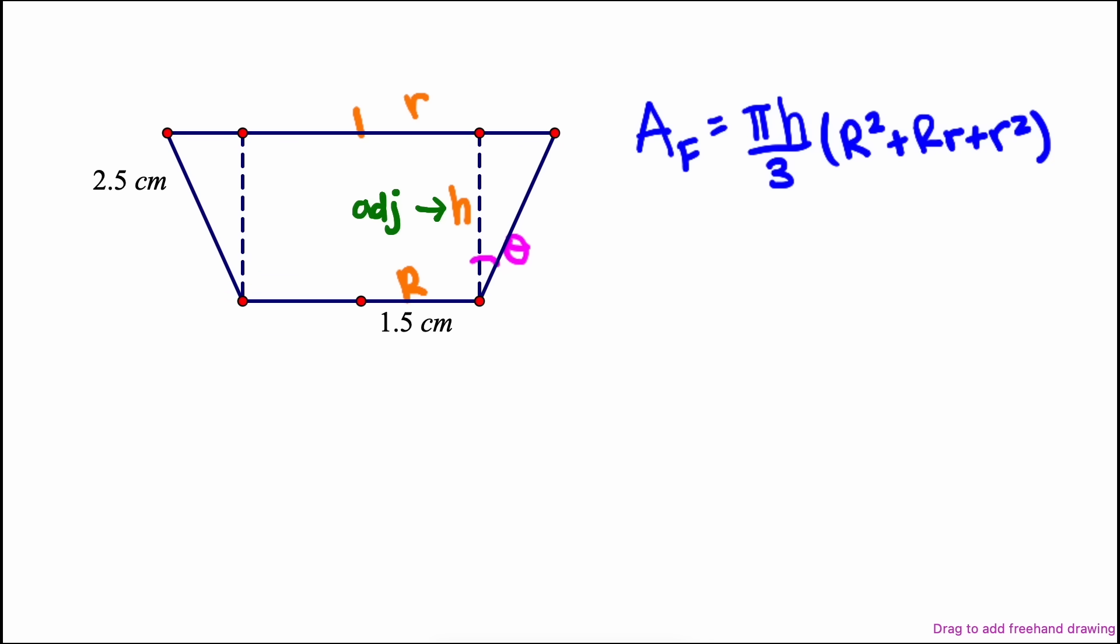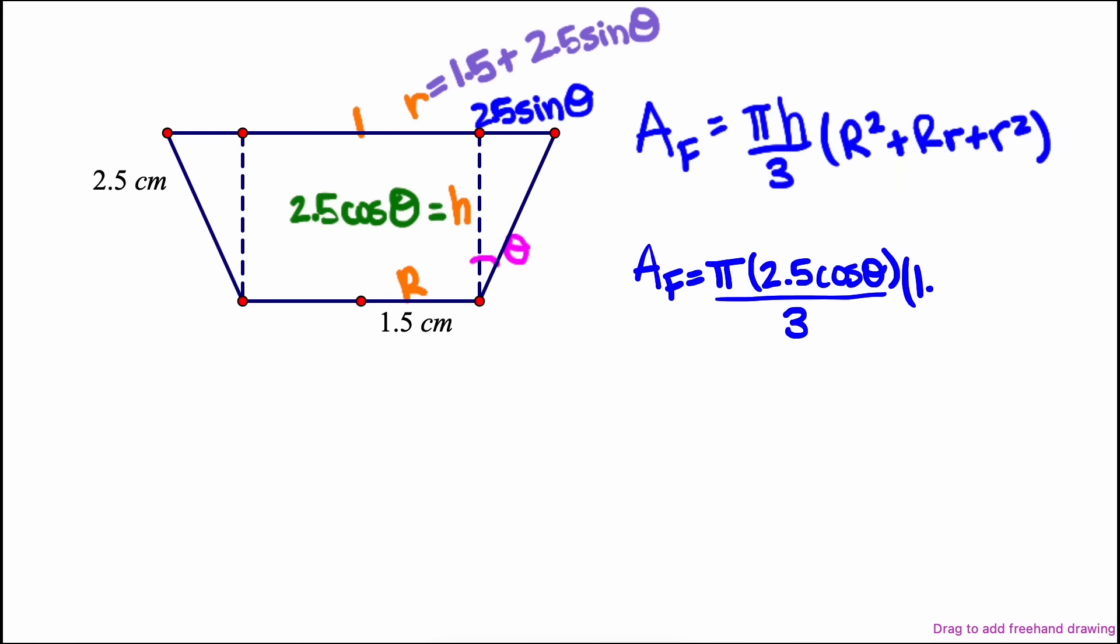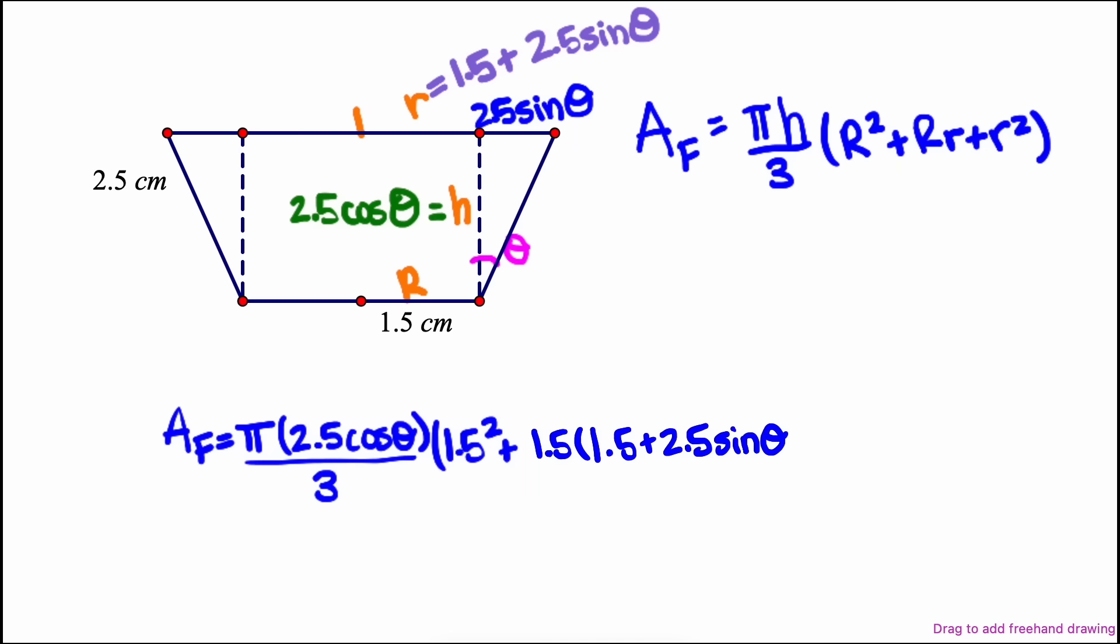The height is an adjacent leg to the angle in this right triangle, so we can use the cosine function. This makes the height cosine of theta times the hypotenuse, which is 2.5 centimeters. The radius of the rim is the radius of the base plus this leg of the right triangle. This leg is opposite the angle, so we can use the sine function in the hypotenuse to get that length. Sine of theta times 2.5. We can now input the radii and the height into the frustum volume formula to give us a formula for the volume of the cup given the angle of the sides.